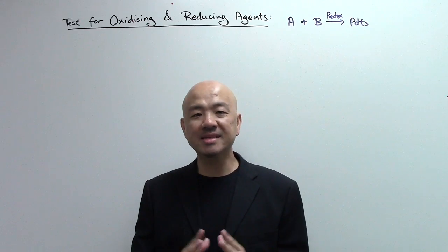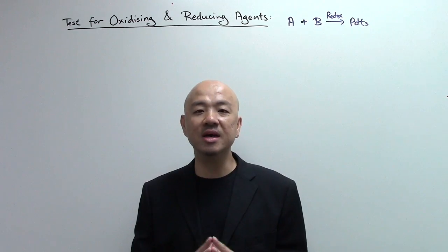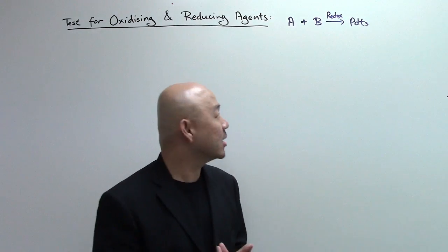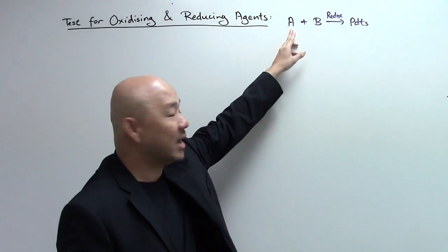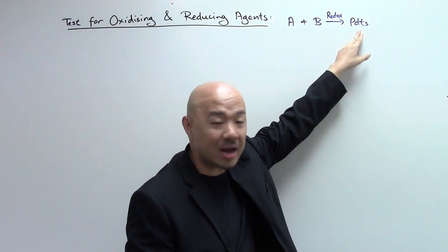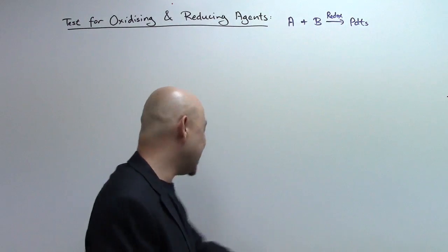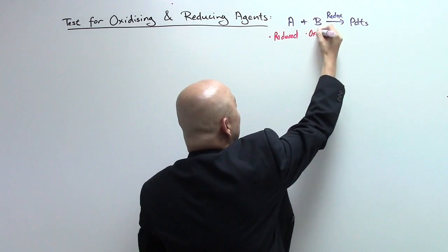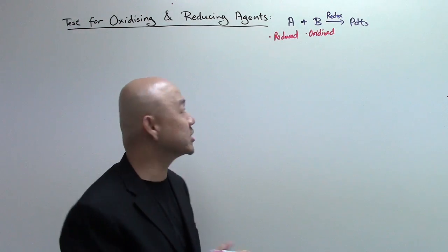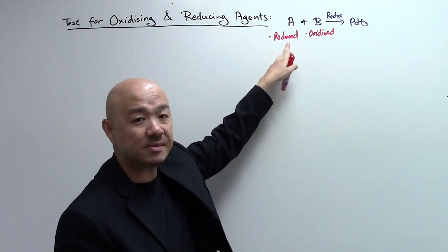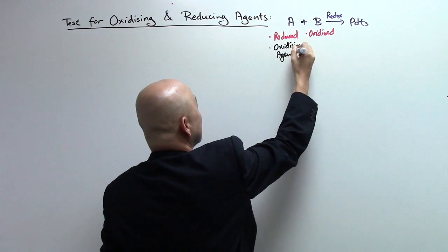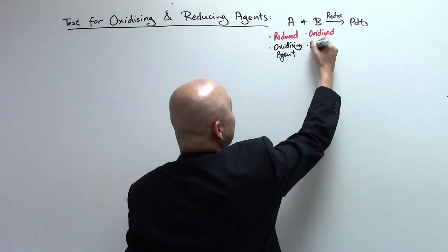A redox reaction is a chemical reaction which involves both oxidation and reduction processes occurring simultaneously. Once you determine a reaction is a redox reaction, if A reacts with B to form products, and A is being reduced, then B will be oxidized. The substance A being reduced is acting as the oxidizing agent, whereas B the substance being oxidized is acting as the reducing agent.